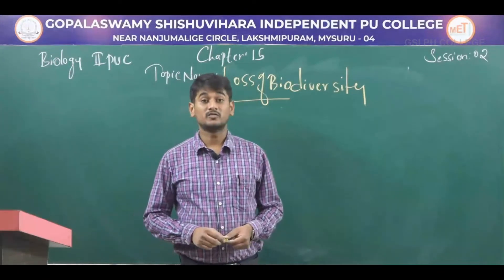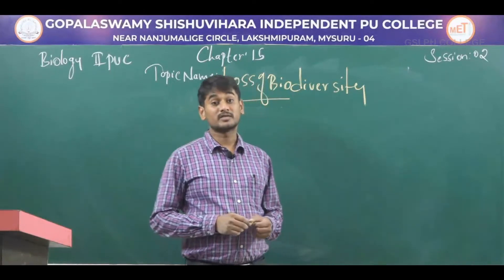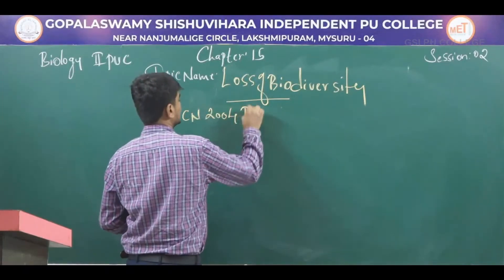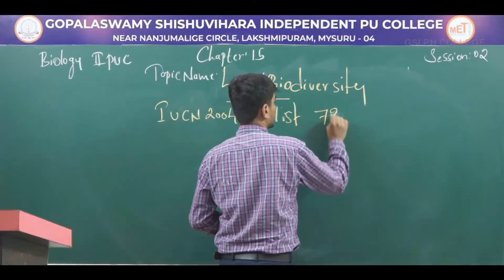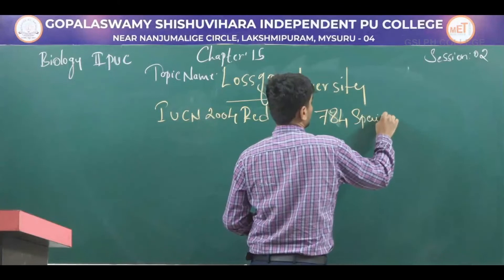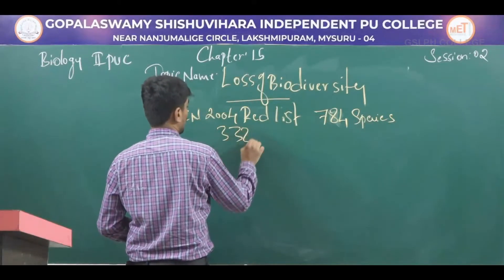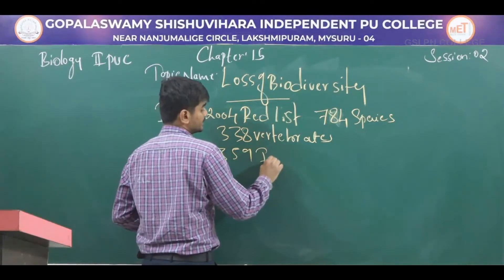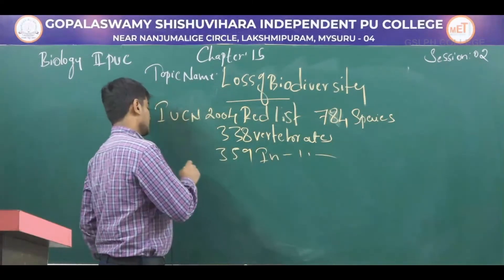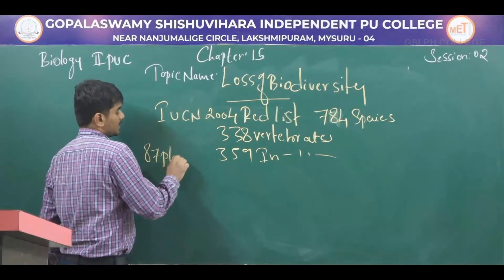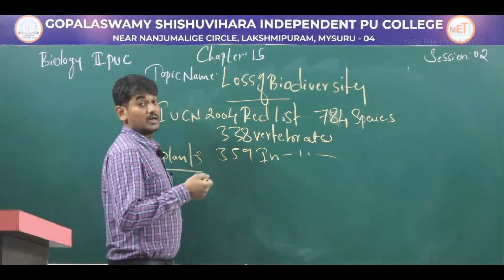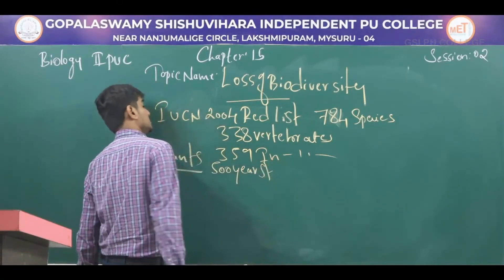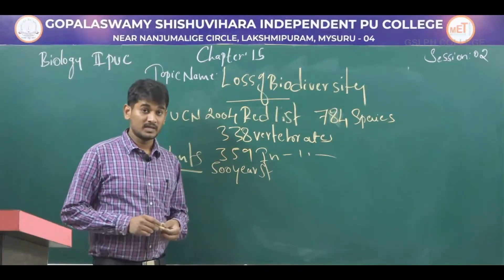The next concept is loss of biodiversity. According to IUCN 2004, at least 784 species — 338 vertebrates, 359 invertebrates, and 87 plants — went extinct in the last 500 years.